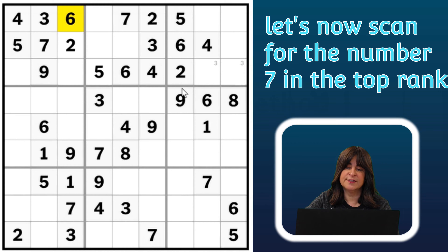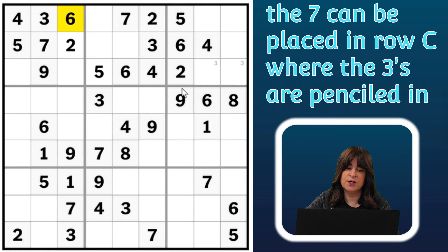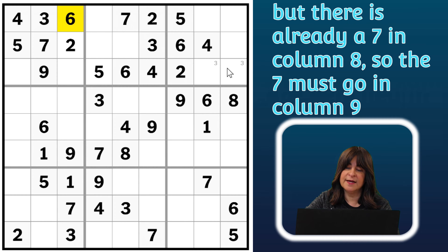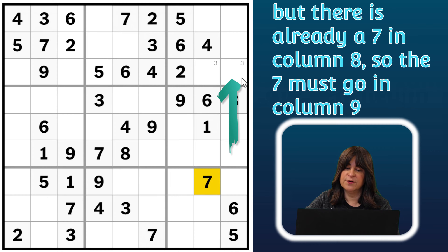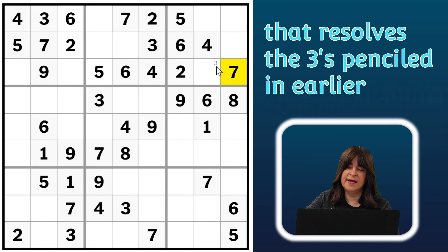Next, let's scan for the number seven. There are two sevens in the top two rows, so the third seven has to go into one of these cells, where I already penciled in threes. But looking down the column, I can see there's a seven in one of the columns, so I can't put a seven here — it has to go here. And now, because I penciled in threes before, I know that this cell has to be a three.